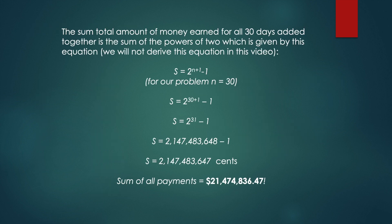So many of you have asked me to show you how to calculate the sum of all the days together. The sum total amount of money earned for all 30 days added together is the sum of the powers of 2, given by the equation S equals 2 to the n plus 1 minus 1 — we will not derive this in this video, maybe that's the subject of a future video. If you evaluate this for n equals 30, you end up with $21,474,836.47.